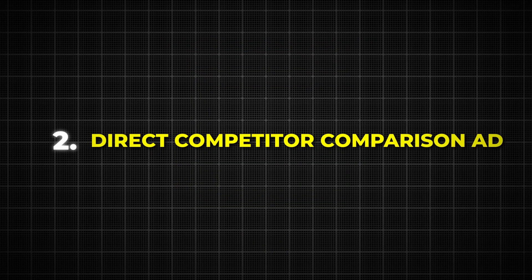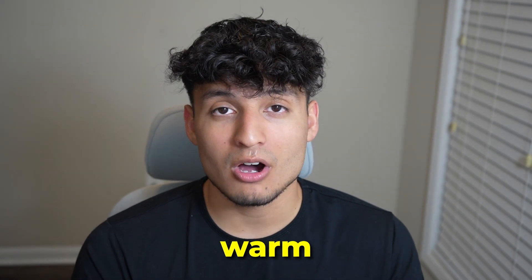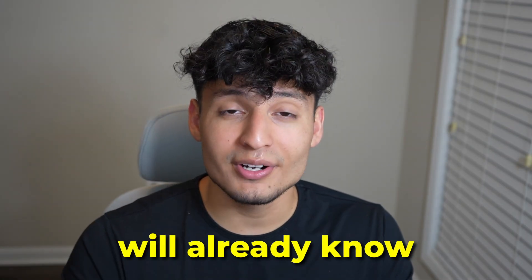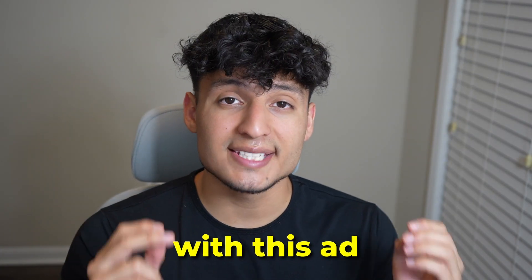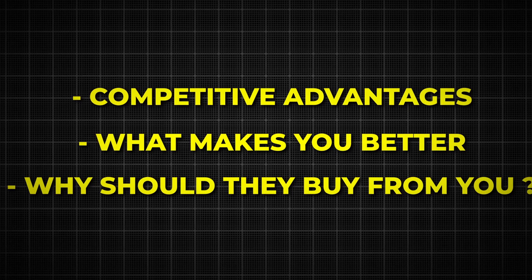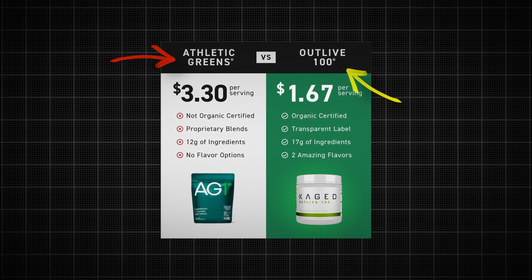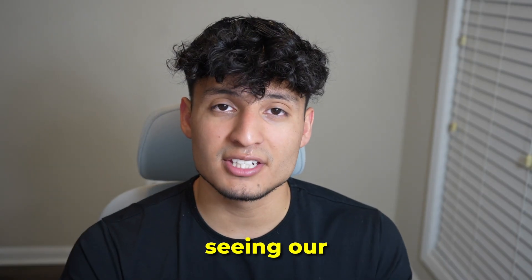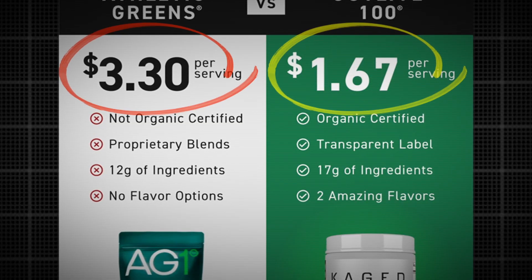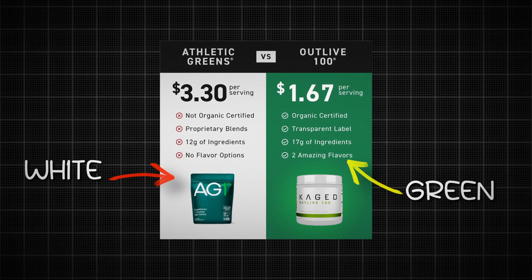Number two is a direct competitor comparison ad. This ad works best for warm audiences. After seeing your product, most buyers will already know alternative solutions to the problem. So your job with this ad is to only push your competitive advantages. In this ad example, you'll see a brand called Outlive 100 comparing themselves to Athletic Greens. Although the product has multiple health benefits, we are not listing them here because the audience has already seen our product and knows what it does. We are here to make our product seem superior through engaging visuals and persuasive copy. List your best competitive advantage in the header, just like Outlive 100 did, and then have supporting details underneath. Lastly, use complementary colors and gradients to make your product stand out in this static image ad.